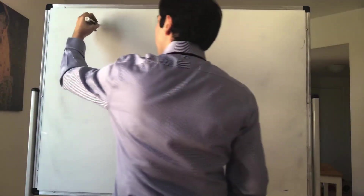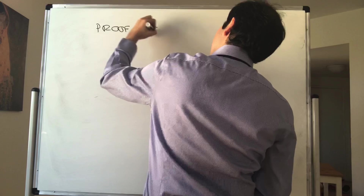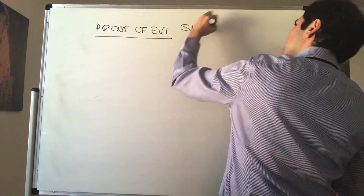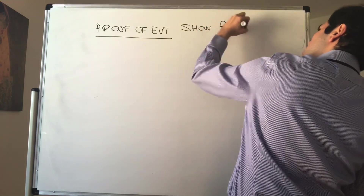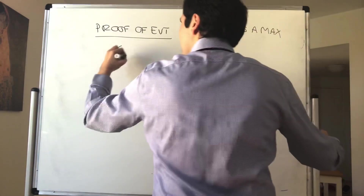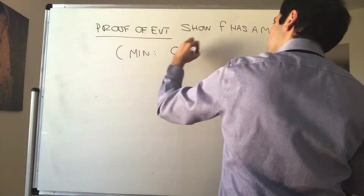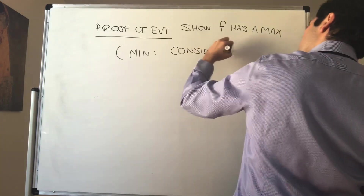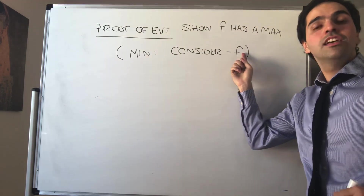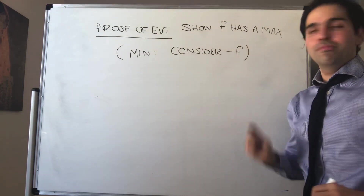Now let's prove the extreme value theorem — and you'll see it's very neat. I will just show that f has a maximum, because for the case of a minimum, just consider −f. If you repeat the proof with −f, you get −f has a maximum, and therefore f has a minimum.